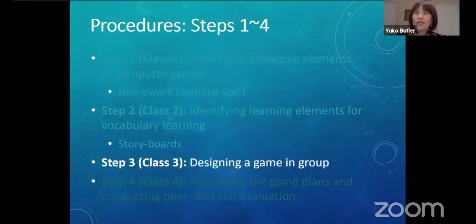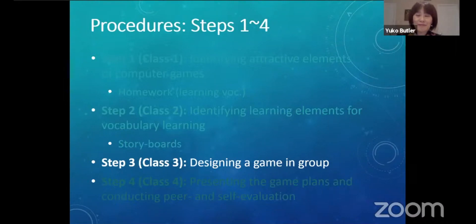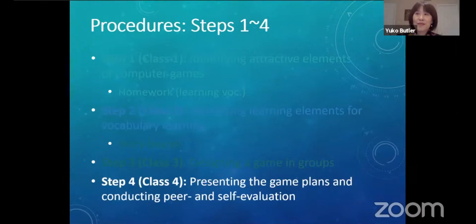In step three, children were tasked to develop a game for learning English words in groups, designed for younger fifth grade students. Once group members came up with a plan, each group drew a storyboard on large paper for their oral presentation. In the final step, each group presented their plan using their storyboards and answered questions from peers. At the end of each presentation, students evaluated their peers' game designs as well as their own, based on criteria — meaning elements — that they themselves came up with.